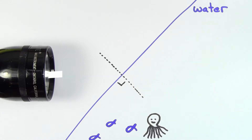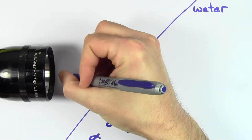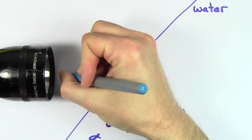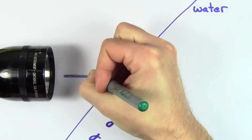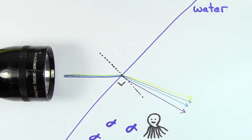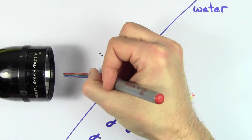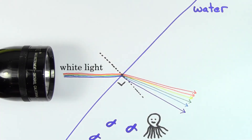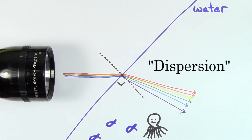But here's the interesting thing. When you send in white light composed of all visible wavelengths, the colors will disperse and get separated from each other. We call this separation of light dispersion.